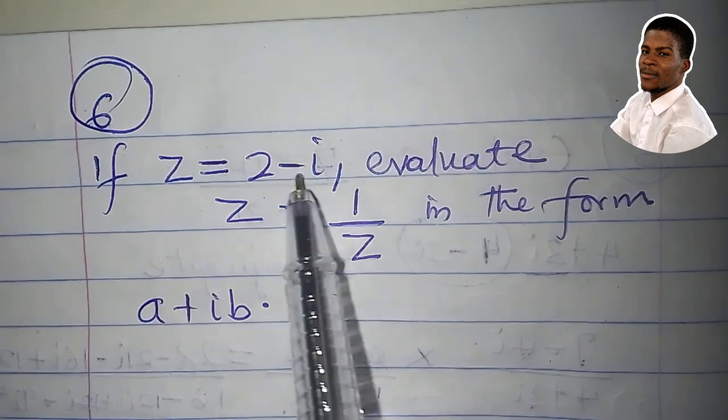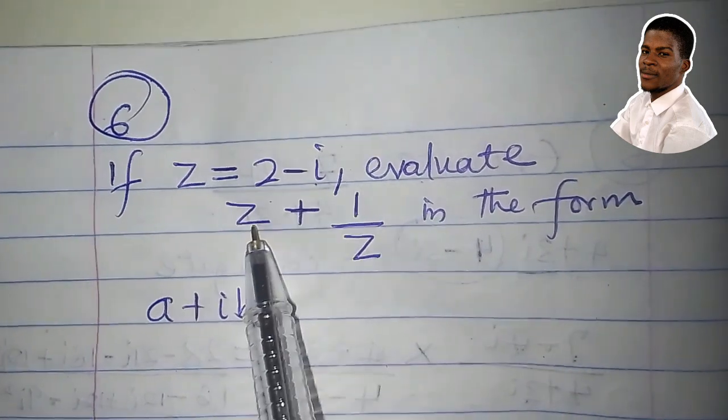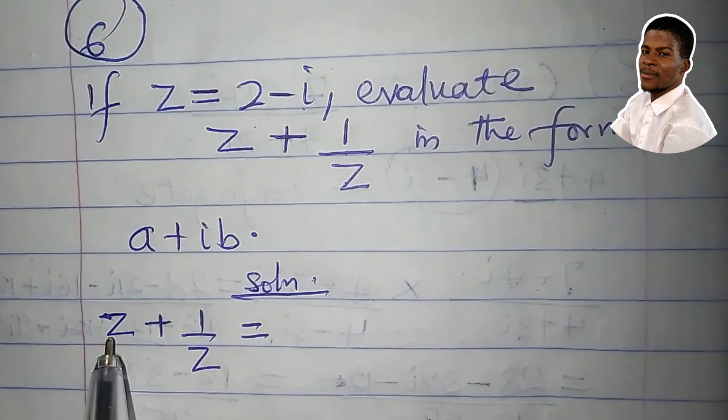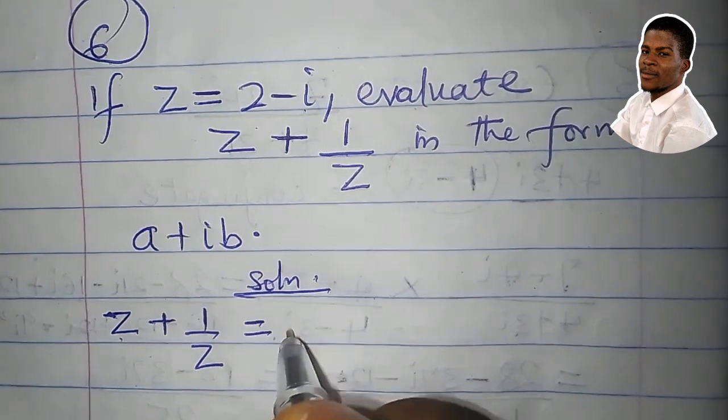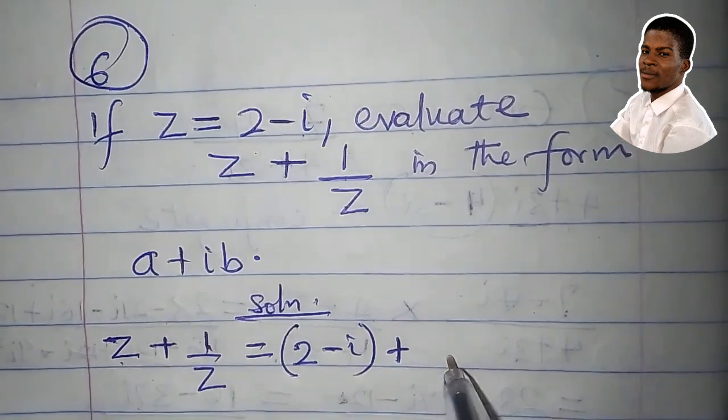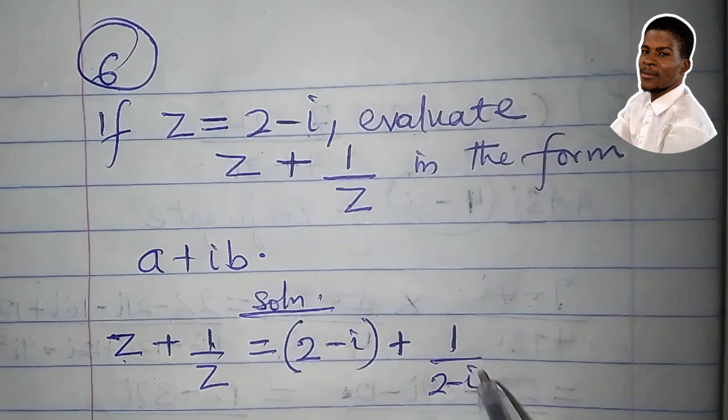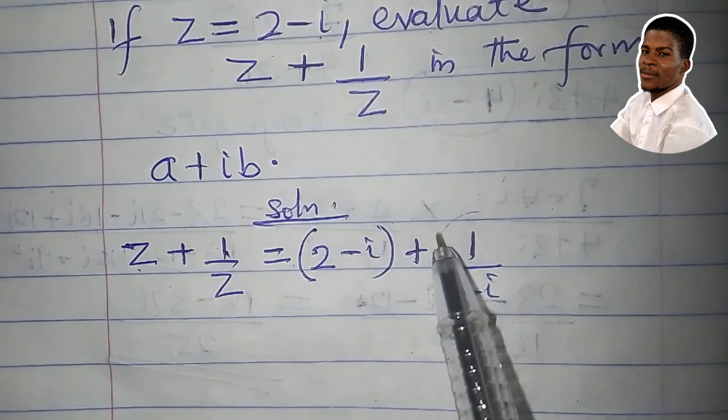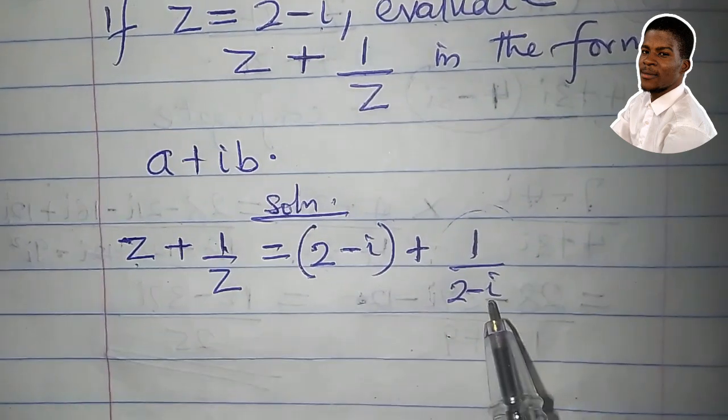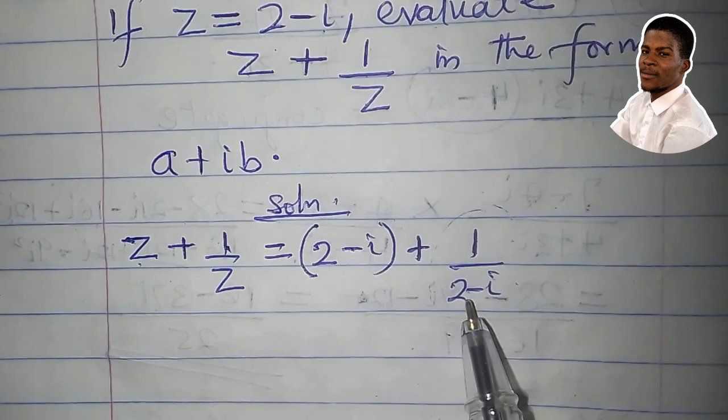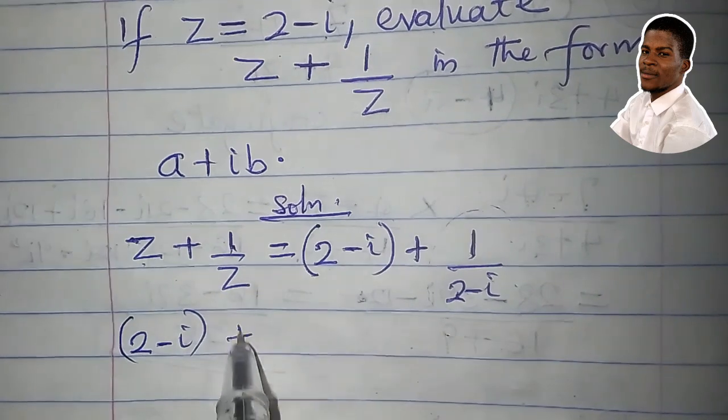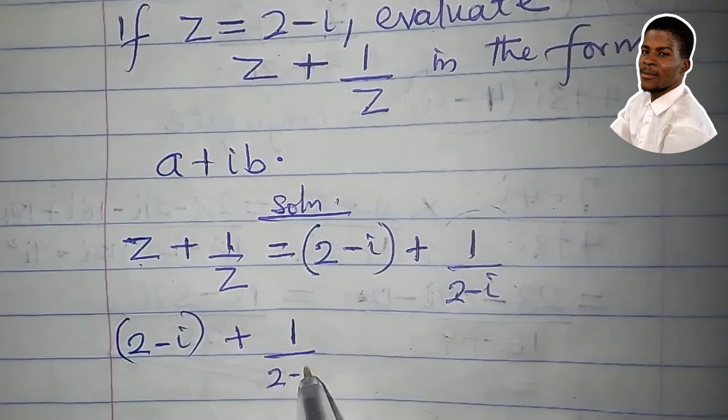If z is equal to 2 minus i, we have to evaluate z plus 1 over z in the form a plus ib. Z is 2 minus i. So 2 minus i plus 1 all over 2 minus i. What we have to do now is to simplify this particular complex number. And to do that, we multiply both top and bottom by the conjugate of the bottom.